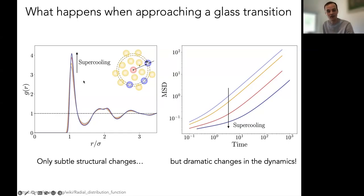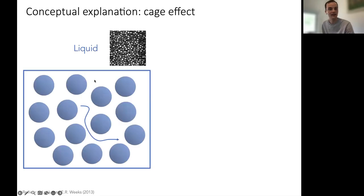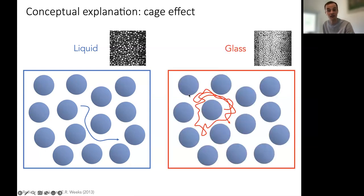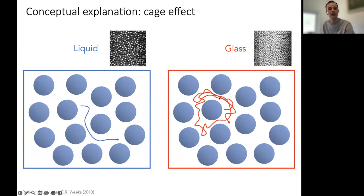One popular interpretation of this disconnect is the cage effect. In a liquid state, particles in dense conditions can still push other particles aside and move throughout the material. But slightly increasing the density can lead to a glass state where this caging by surrounding particles becomes very dominant. Even with little structural change, particles can no longer escape their local cage — they would have to push surrounding particles, which in turn push others, and so on. This is a key conceptual idea of what happens during a glass transition.